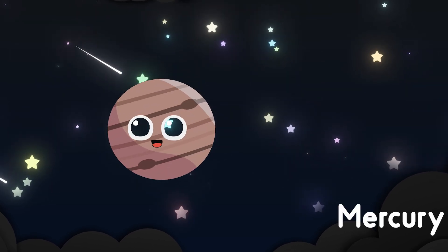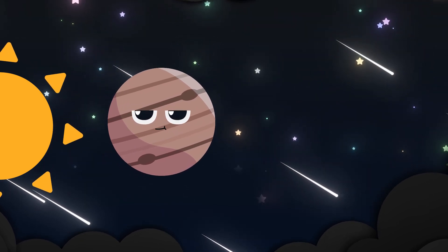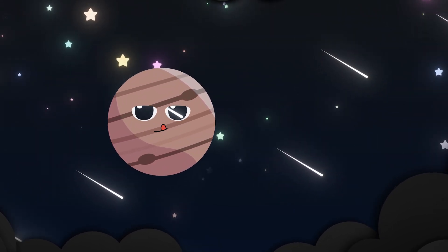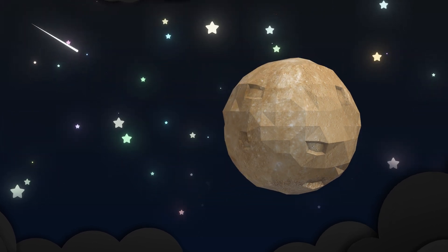Mercury's first, so close to the sun, hot in the day when the light has won. Small and gray, it moves so fast, a tiny world that races past.